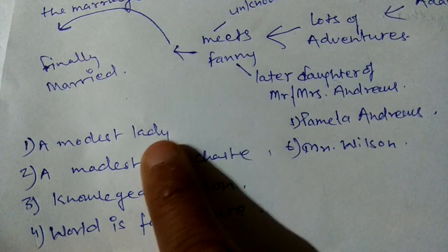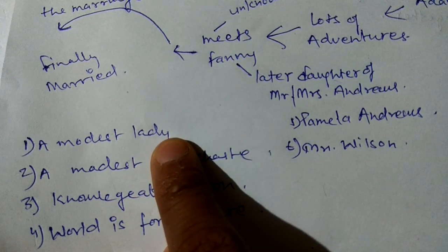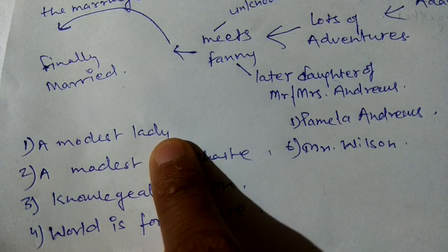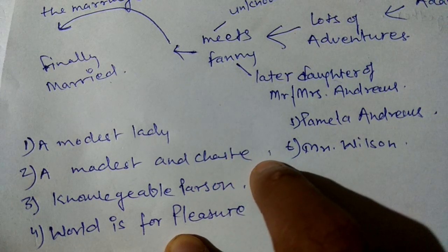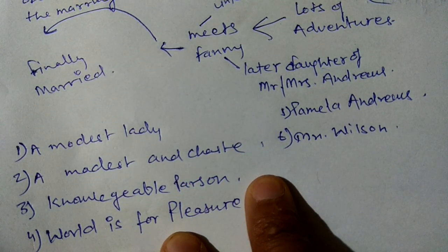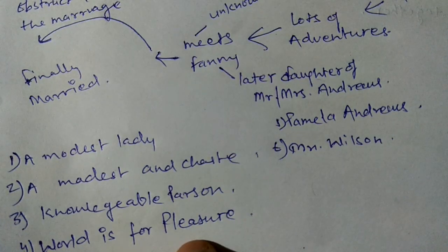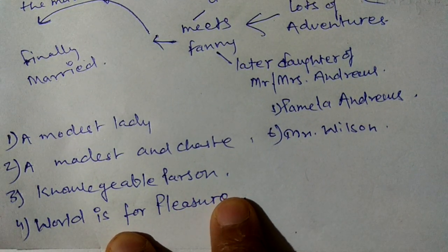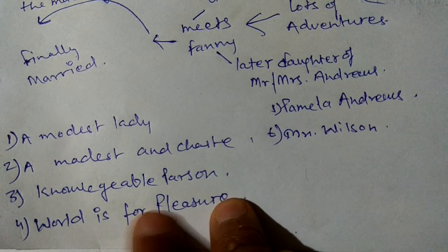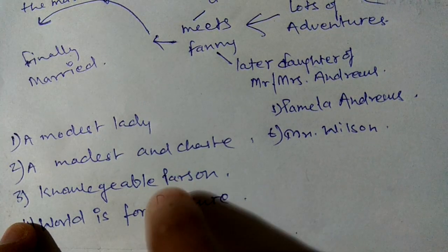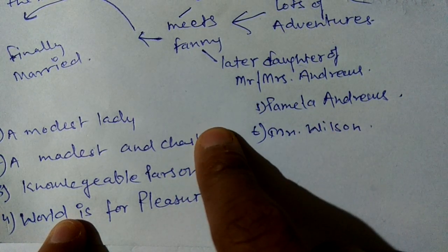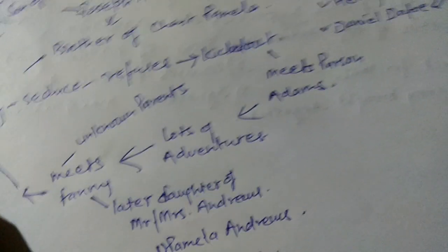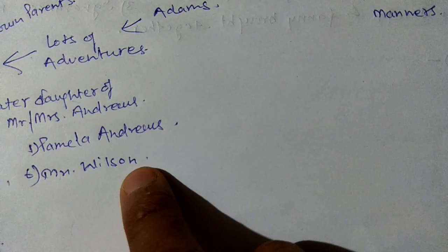Here are some important characters: a modest and chaste woman — that is Pamela Andrews and her brother Joseph Andrews. A knowledgeable person — that is Adams. The person who thinks the world is for pleasure — that is related to Lady Booby. And Mr. Wilson is also a notable character.